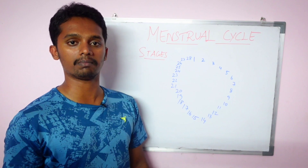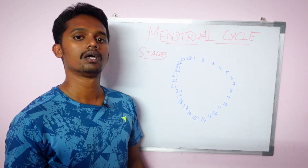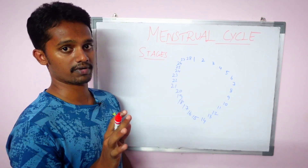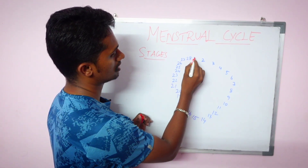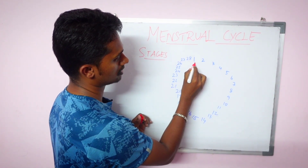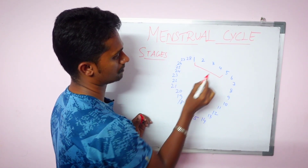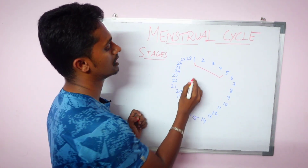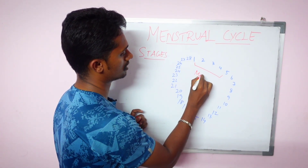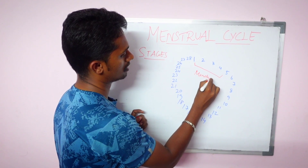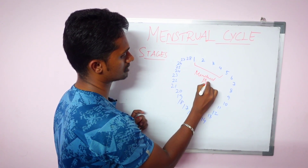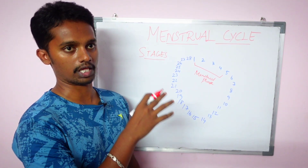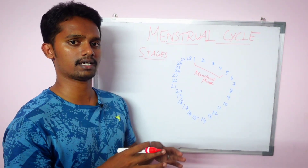The first phase of the menstrual cycle is menstruation. Day 1 to day 5 is the first phase. That is called the menstrual phase. This is the bleeding phase.